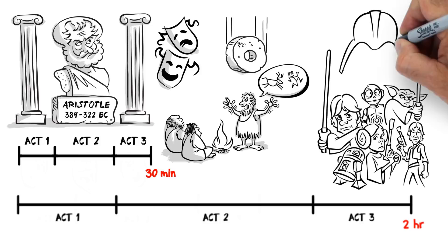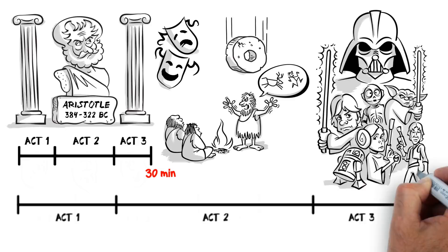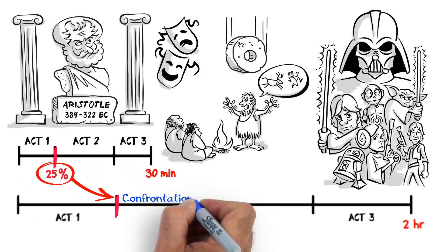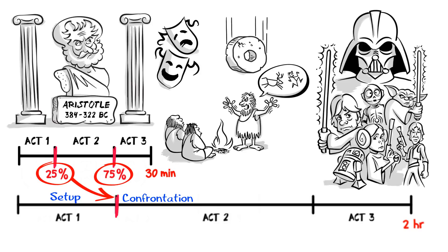Now, looking at the timing relationships between them, what happens at the 25% mark of the half-hour comedy has the same dramatic effect, or the same purpose, as the event that occurs at the same percentage of the two-hour epic. It's where the confrontation begins after the setup in Act 1. And at 75%, we transition to the climax, which also happens at 75% of the longer version, all proportional, regardless of length.